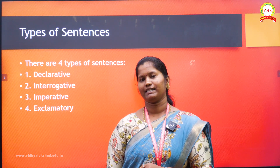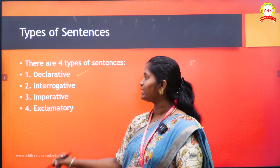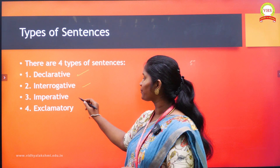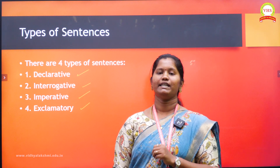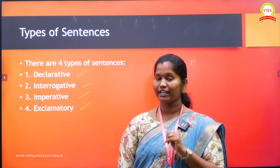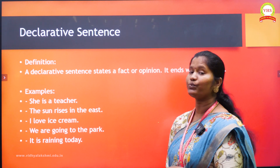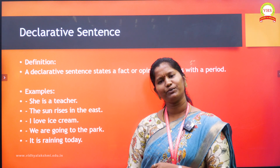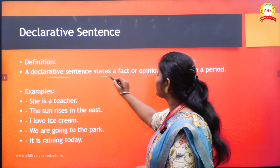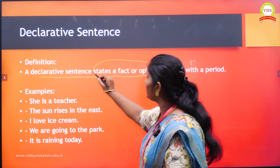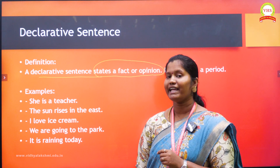We have four types of sentences. What are they? The first one is declarative, the second one is interrogative, the third one is imperative, and the fourth one is exclamatory. Now, let's look at the first type: the declarative sentence. A declarative sentence states a fact or opinion, and it ends with a full stop.